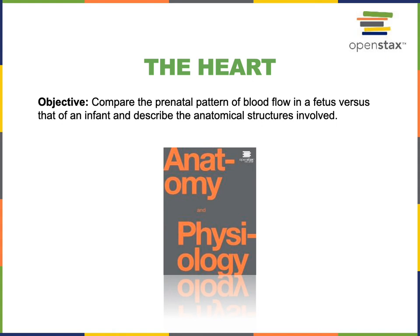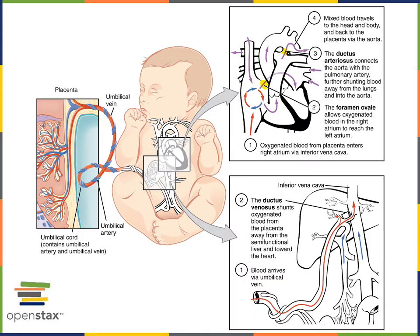This video will cover the following objective: compare the prenatal pattern of blood flow in a fetus versus that of an infant, and describe the anatomical structures in the fetal circulation. Oxygen comes from the maternal blood across the placenta.